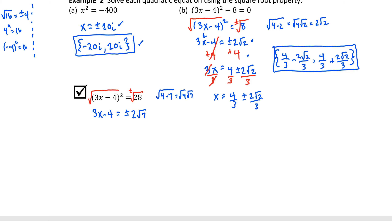Remember: the square root property is fast and efficient, but it only works on equations where you can isolate the squared part having nothing but a constant left behind.